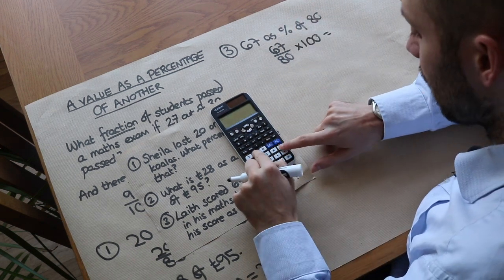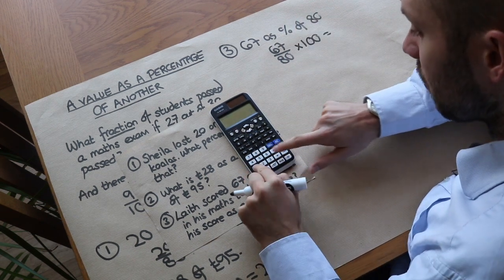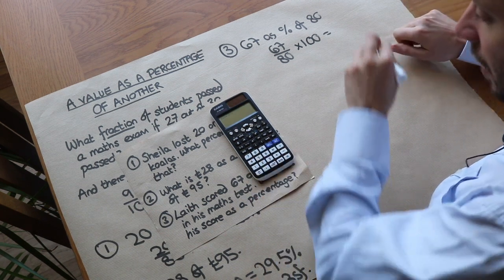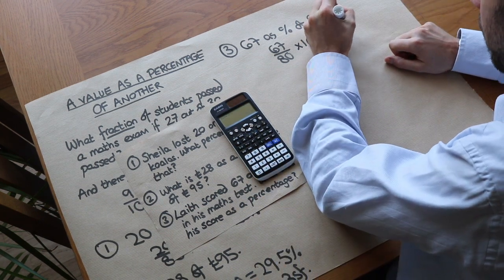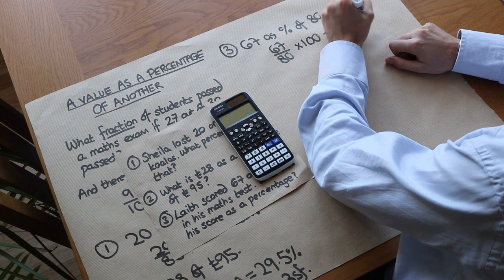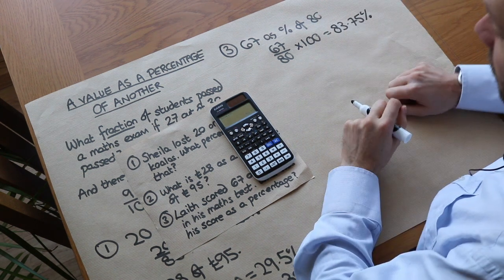So we do 67 out of 80, times it by 100, press the SD key, and it was 83.75 percent. It's a pretty good score. And that is it.